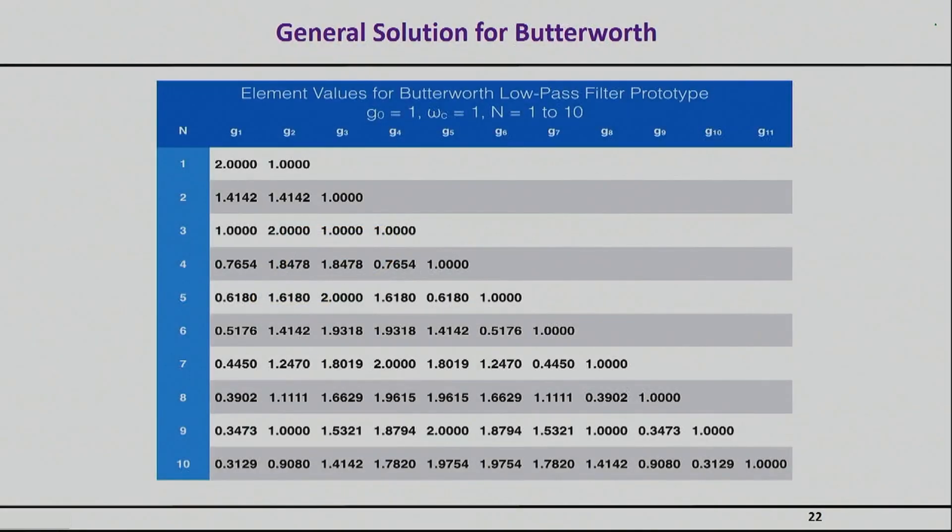So here's a table that allows you to see the Butterworth prototype solutions. One thing I want you to notice is the g(n+1) value, because that's basically the last element and is the load. What that table means is that if you choose the first order filter, the last element which will be your load should be equal to 1 ohm.